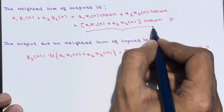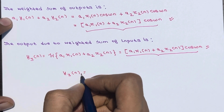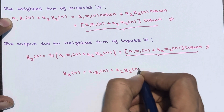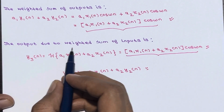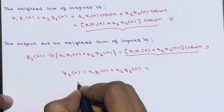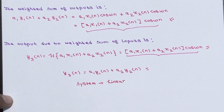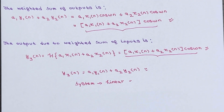Comparing both expressions, they are equal, so we can conclude y3(n) = a1·y1(n) + a2·y2(n). This means the weighted sum of outputs equals the output due to the weighted sum of inputs, so the superposition principle is satisfied. Therefore, the given system is a linear system. We have done almost five examples based on linearity — if you have any doubt, ask in the comment section. Thanks for watching and don't forget to subscribe.